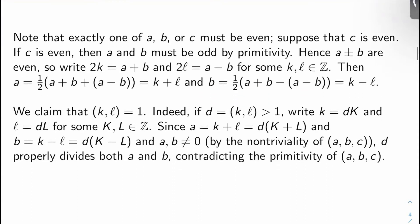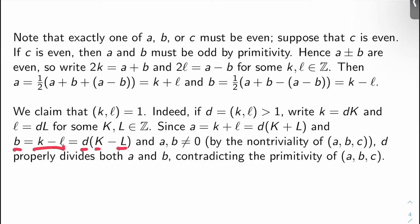The first claim is that the GCD of K and L is 1. If D is the GCD of K and L and is bigger than 1, write K equals D times big K and L equals D times big L. Then A equals D times (big K plus big L) and B equals D times (big K minus big L). Since A and B aren't zero by non-triviality, D properly divides A and B, contradicting the primitivity of A, B, C. So the GCD of K and L is 1.